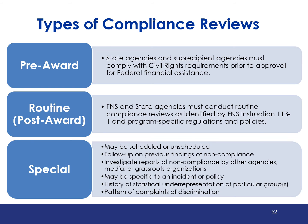In pre-award reviews, state agencies and subrecipients must comply with civil rights requirements prior to approval for federal financial assistance. Routine or post-award reviews are routinely conducted by FNS and state agencies based on FNS Instruction 113-1 and program-specific regulations and policies. Each of the components discussed within this training would be included as an area of review within a routine or post-award compliance review. A special compliance review may be scheduled or unscheduled and is completed to follow up on prior findings, to investigate reports of non-compliance by other agencies, media, or grassroots organizations, and may be based on a history of statistical underrepresentation of a particular group or as a result of a pattern of complaints of discrimination.